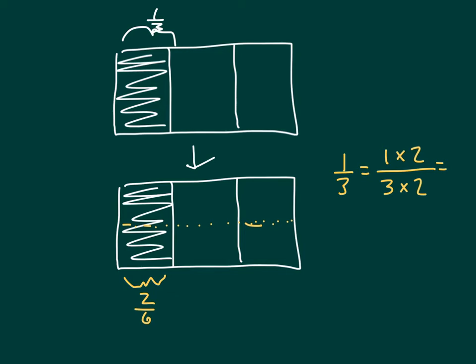So what we have shown is that one-third does equal two-sixths not only by using our area model, but also by showing that multiplication. You'll notice that we multiplied by two not only in the numerator, but also in the denominator.